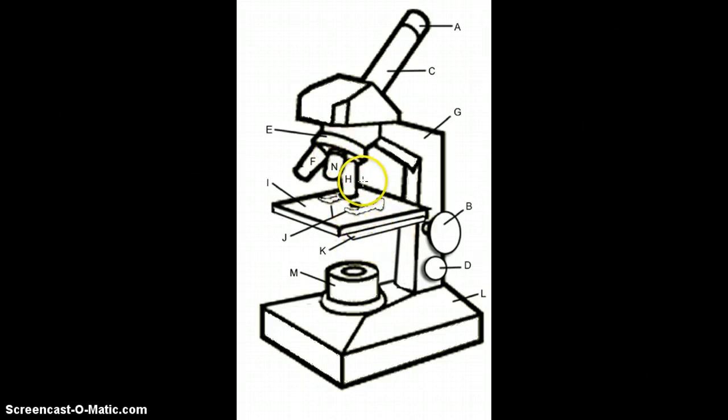N is the scanning power objective times 4, so you can zoom in four times as much. And H is the high power objective, times 40, so you can zoom in 40 times, really really zoomed in.